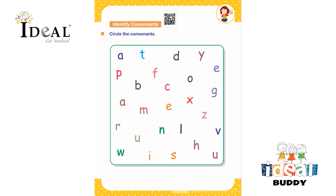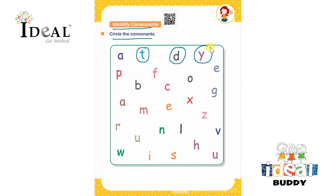Hello everyone. In this page, the child has to identify the consonants and circle them. The strategy is: let them read the letters one after the other and identify the consonants. The first is A, which is a vowel. Next is T, which is a consonant. Then circle D, Y. E is a vowel. Circle P, B, F, C. O is a vowel.